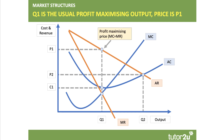Now the profit maximising output is Q1, where marginal revenue meets marginal cost. And then if you draw up to the demand curve, you see that the profit maximising price is P1. So if the market was a monopoly with high barriers to entry, then the firm would maximise profits at output Q1 and price P1. Of course the cost per unit is C1, so there would be a substantial monopoly profit to be made.